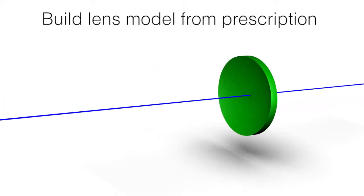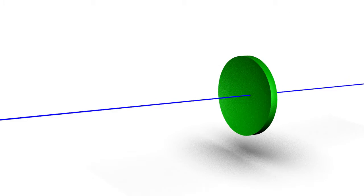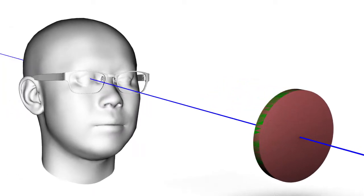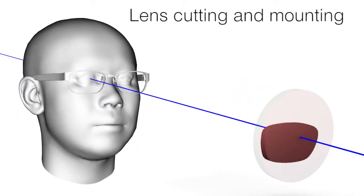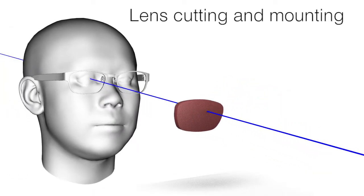We then create a parametric lens model based on the user's prescription. Lenses are aligned with the user's eye center based on the optical axis. We trim the lenses and mount them into the eyeglasses frame.